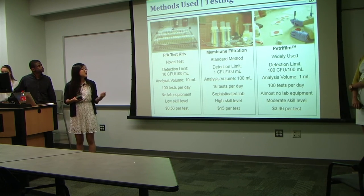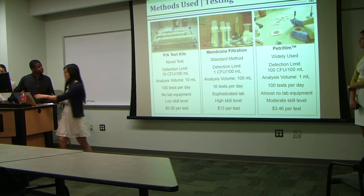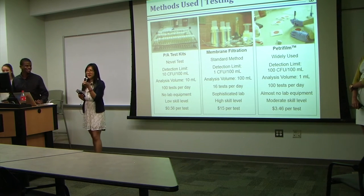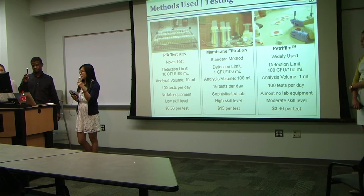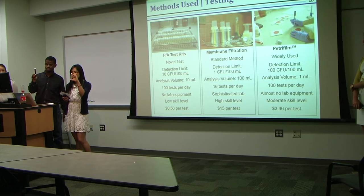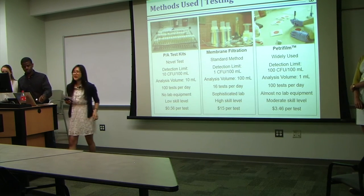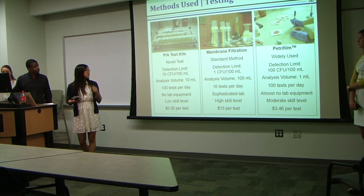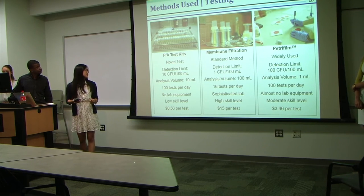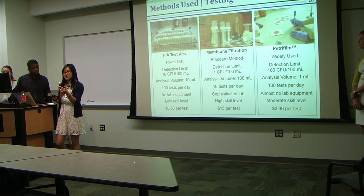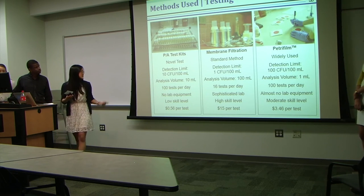Three different kinds of water quality tests were compared in La Paz. The first is called a presence-absence test. It's called that because if the test detects the presence of E. coli, then it turns purple, and if not, it just stays a cloudy water color. This is a novel test being researched at Georgia Tech, not currently used as a water quality testing method. The detection limit is 10 CFU per 100 milliliters, which makes it perfect to track for the Sustainable Development Goals. The analysis volume is 10 milliliters, it's very adaptable, and it's also very affordable at only 50 cents per test.